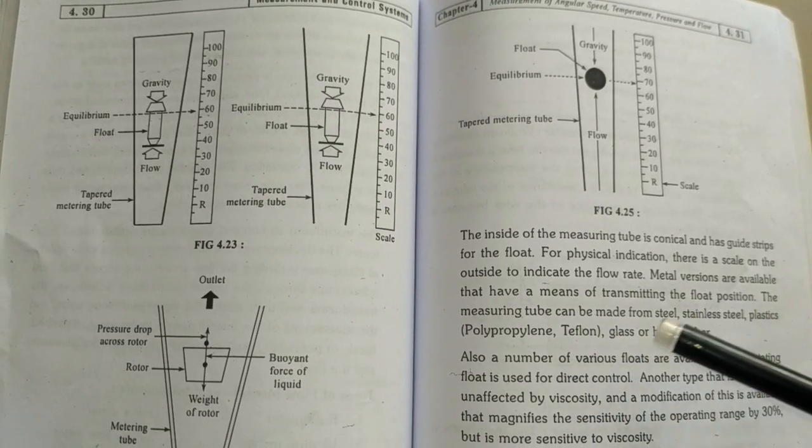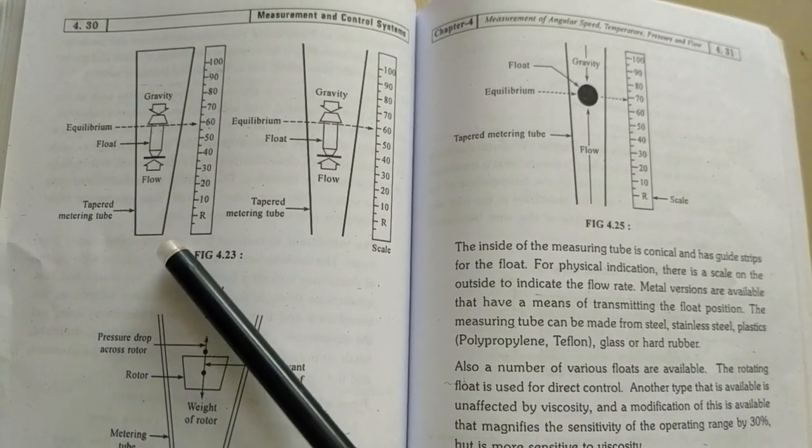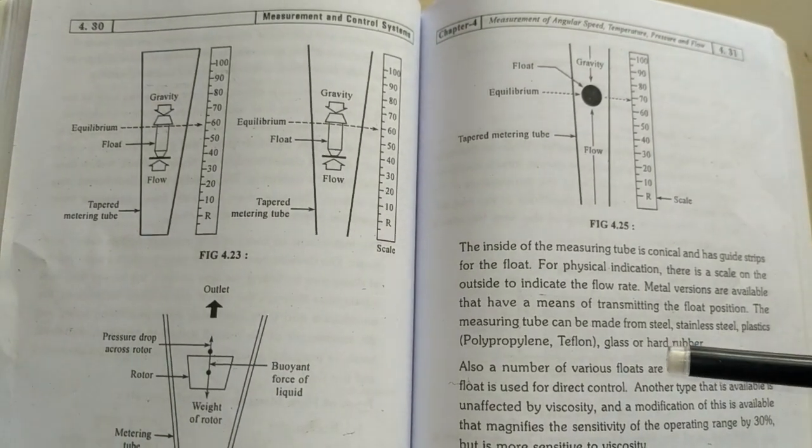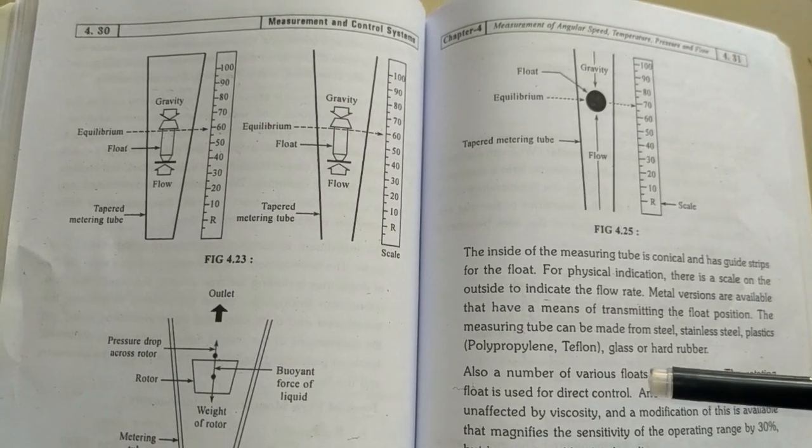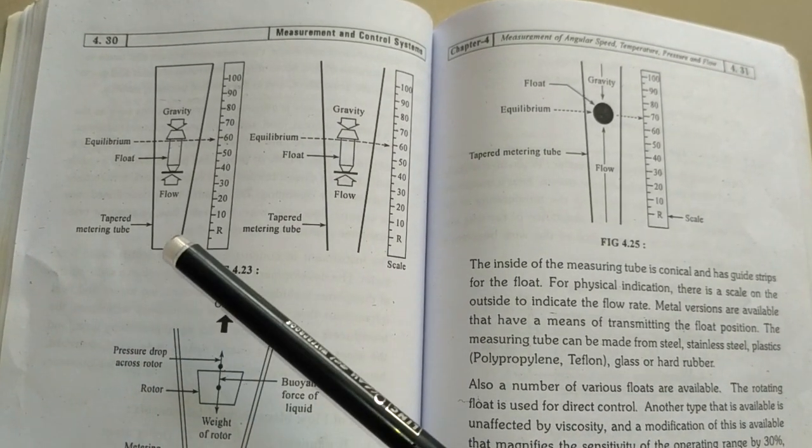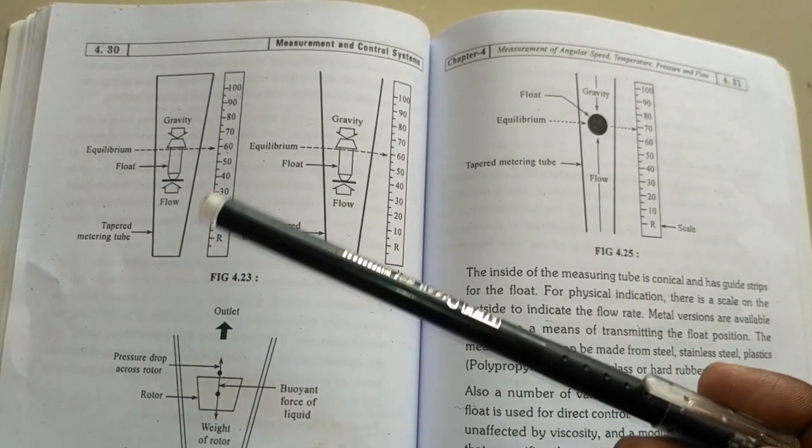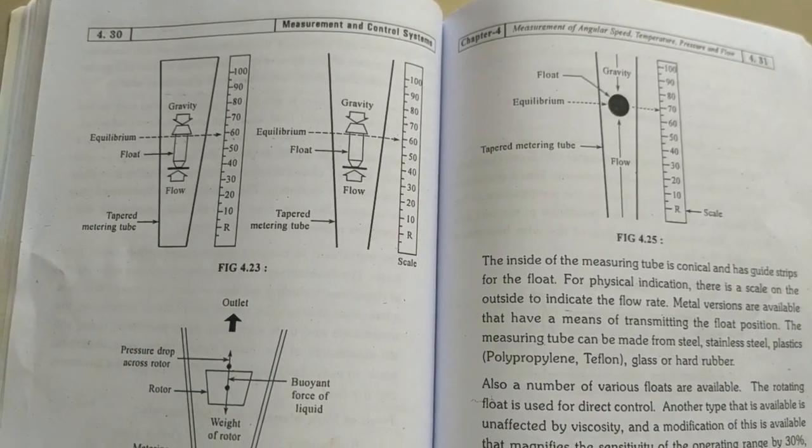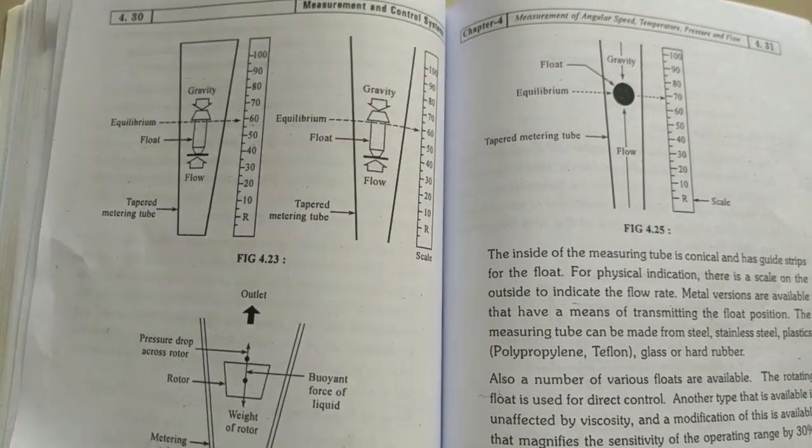The measuring tubes can be made of steel or stainless steel, plastic polypropylene or Teflon, glass or hard rubber. These tubes can be connected with the normal pipeline.